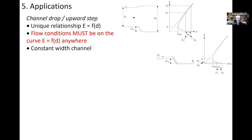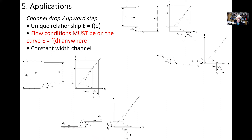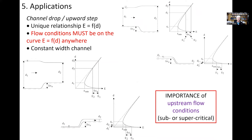We can apply the same reasoning to an upward step, which corresponds to a decrease in specific energy. A key message is that a smooth and short transition is strongly affected by the upstream flow condition, and we may obtain different downstream conditions depending on whether the upstream flow is sub- or supercritical.